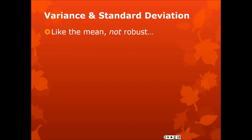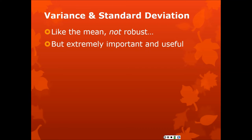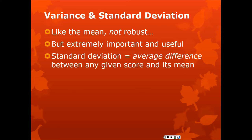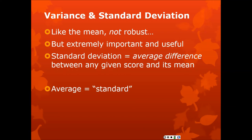The variance and standard deviation are like the mean — not robust. Like the mean, they have the wonderful property that they are sensitive to all the values in the distribution. But that sensitivity can cause problems if there's skew or outliers. They are extremely important and useful. The standard deviation is built like the mean, and it's built from the mean. It's the average difference — the mean deviation — between any given score and the mean. In this context, 'standard' means 'average' — it's old-timey math language, but it's stuck around in 'standard deviation.'